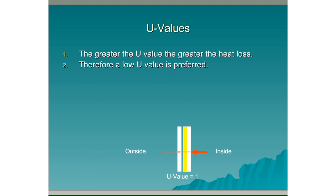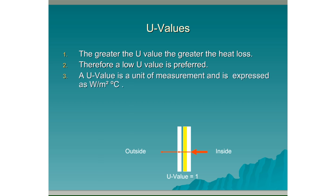Therefore a low U value is preferred. The greater the U value, the greater the heat loss; the lower the U value, the lower the heat loss. A U value is expressed as watts per meter squared degree Celsius.